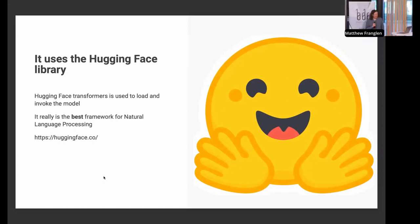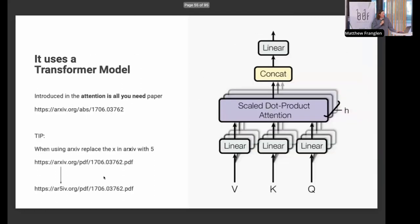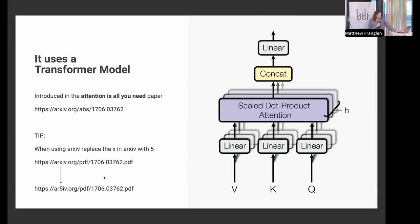It also uses HuggingFace — you should definitely use HuggingFace if you're doing natural language processing. It uses a transformer model, which has been the hotness for a while — introduced in the 'Attention Is All You Need' paper. I'll post these slides with links onto the Slack channel. If you're familiar with recurrent neural networks and LSTMs, transformers process the entire input all at once rather than one word at a time, which avoids the problem of information at the start of a sentence having to pass through every single word to reach the end.